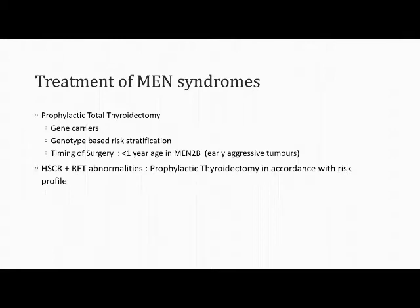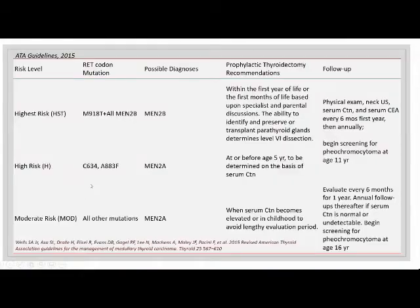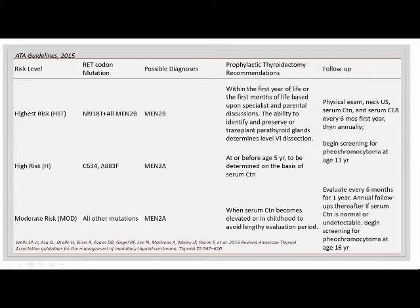Timing of prophylactic thyroidectomy follows the ATA 2015 guidelines: in the highest risk group (MEN 2b), surgery should be done within the first year of life, ideally the first few months after parental counseling. In high-risk cases, surgery is performed before five years of age. In moderate-risk MEN 2a, it can be done when serum calcitonin becomes elevated or during childhood to avoid lengthy follow-up. Serum calcitonin is monitored every six months in the first year and annually thereafter. Screening for pheochromocytoma begins at age 11 in moderate/low-risk patients and at 16 years for low-risk.